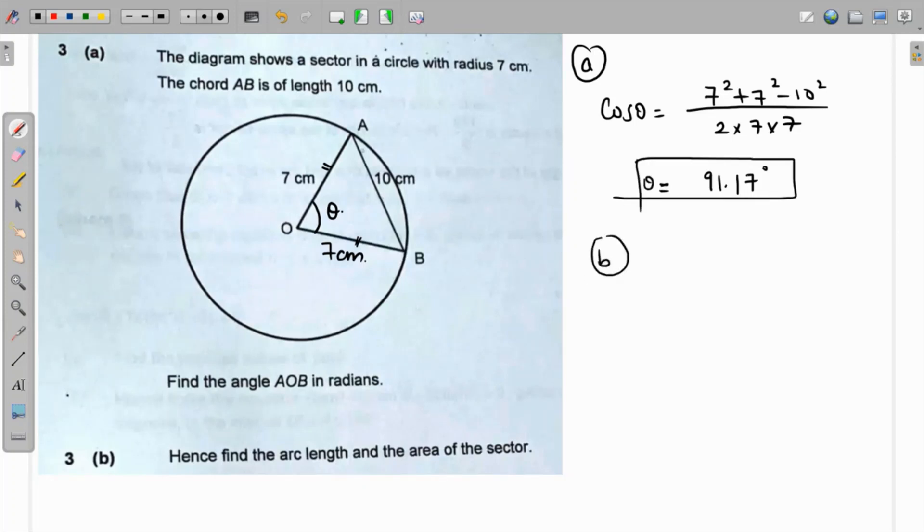For the length of the arc we can clearly use the formula that theta equals arc length over the radius, but mind that theta must be in radians.